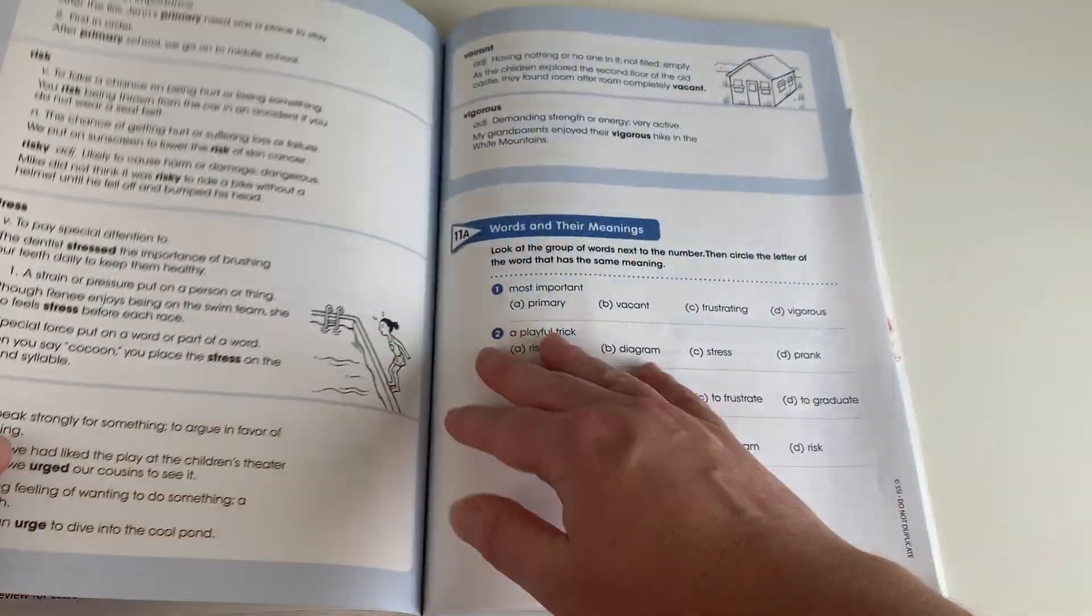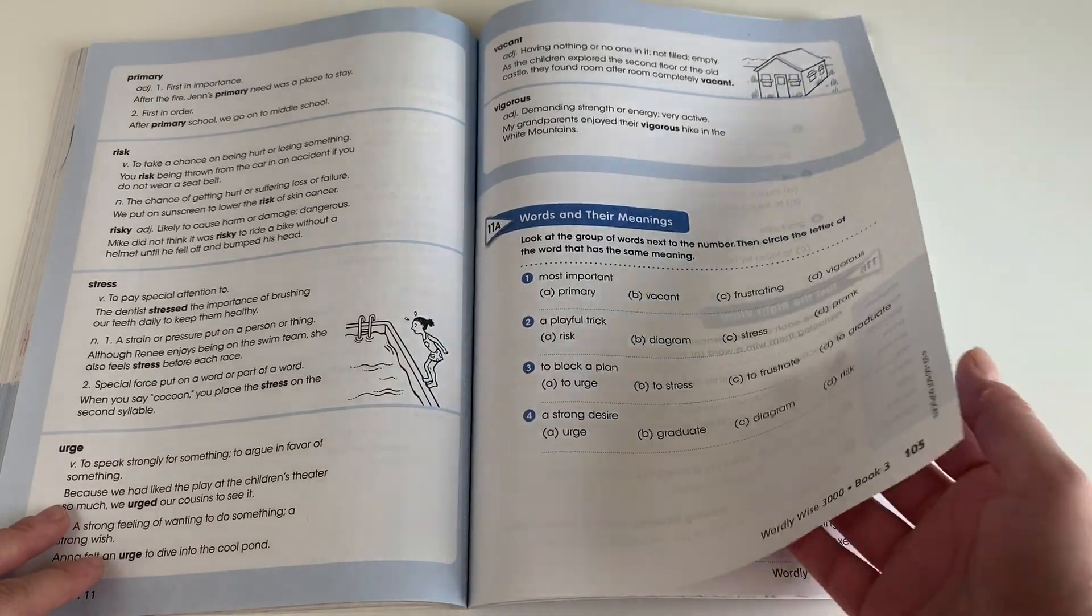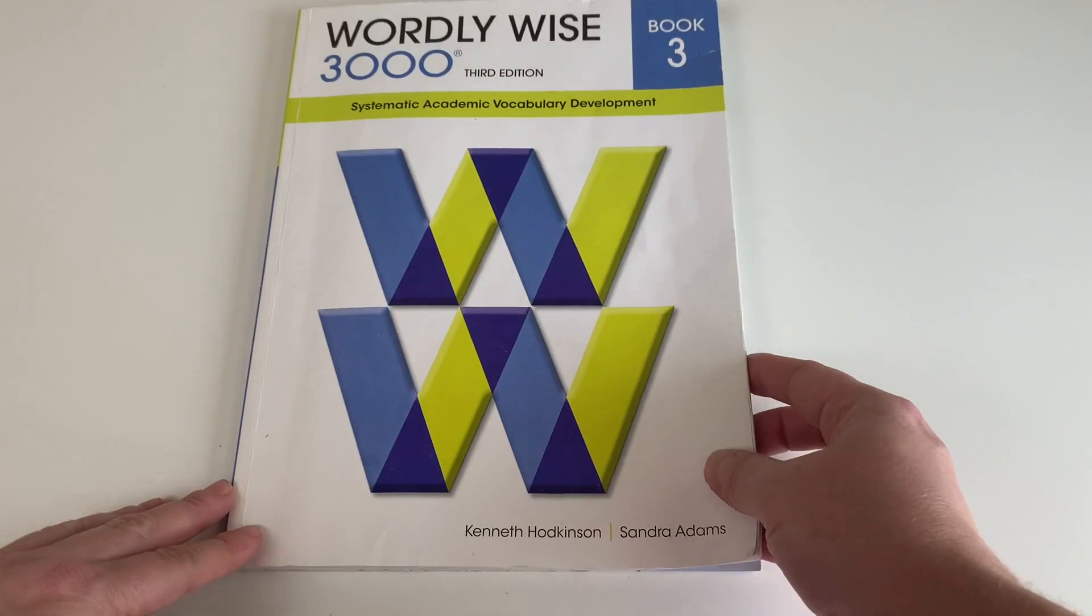So I really do like it for vocabulary building, but we're just working through it super slowly at her own pace just so she can really learn the words. I hope you enjoyed seeing what we will be using for our fourth grader this coming school year. If you want to see what we'll be using for our group subjects or for our other grade levels, please like and subscribe, and as always, thanks for watching.